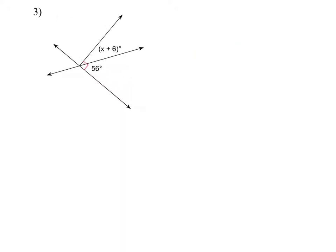Next, again, as you can see, those two angles are, again, they are complementary angles. So x plus 6 plus 56 equals 90.